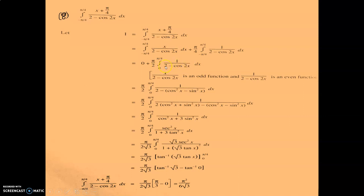The second part: pi by 4 times 2 times integral 0 to pi by 4 of 1 upon (2 minus cos 2x) dx, since it is an even function. The 2 and the 4 give pi by 2. Now cos 2x can be written as cos square x minus sin square x. Substituting: 2 minus (cos square x minus sin square x) equals 2(cos square x plus sin square x) minus (cos square x minus sin square x) equals cos square x plus 3 sin square x.